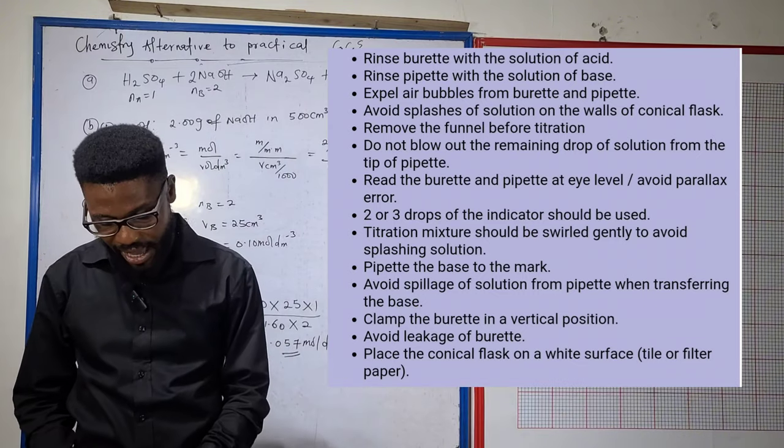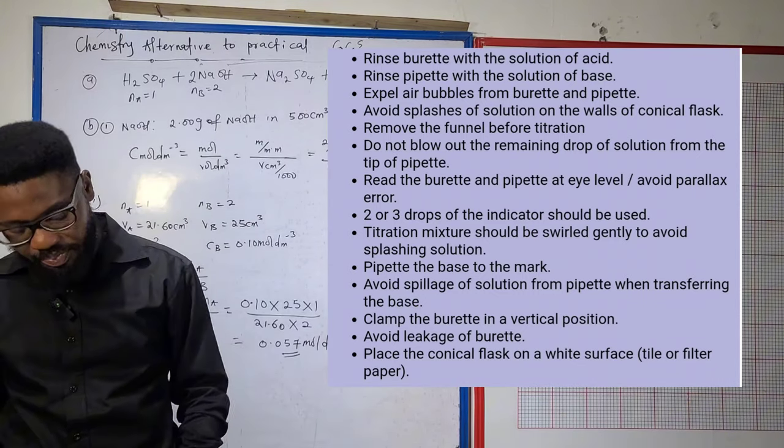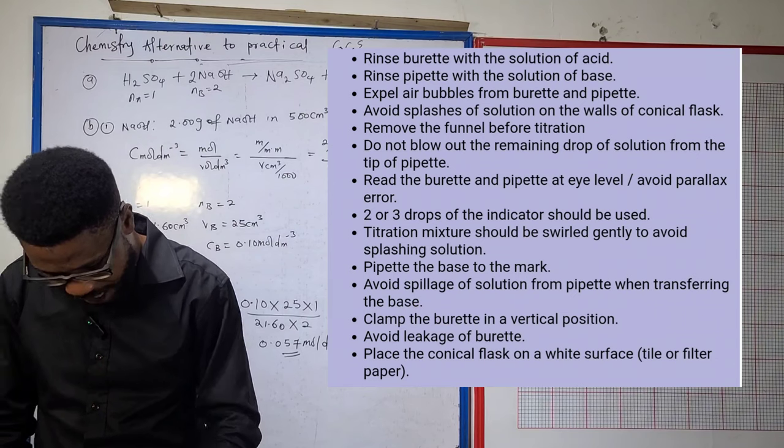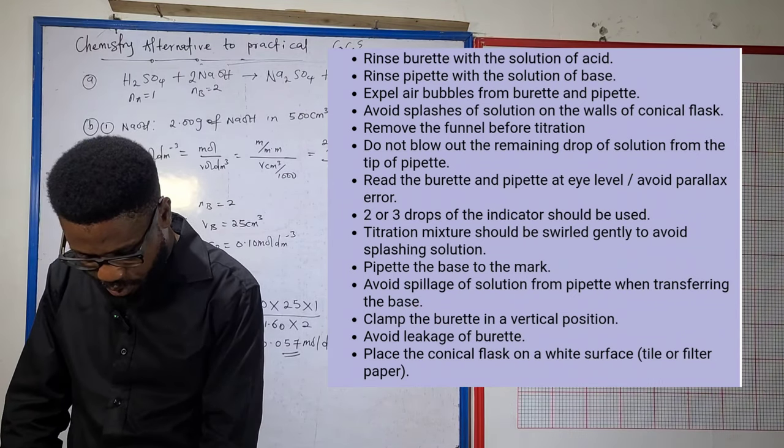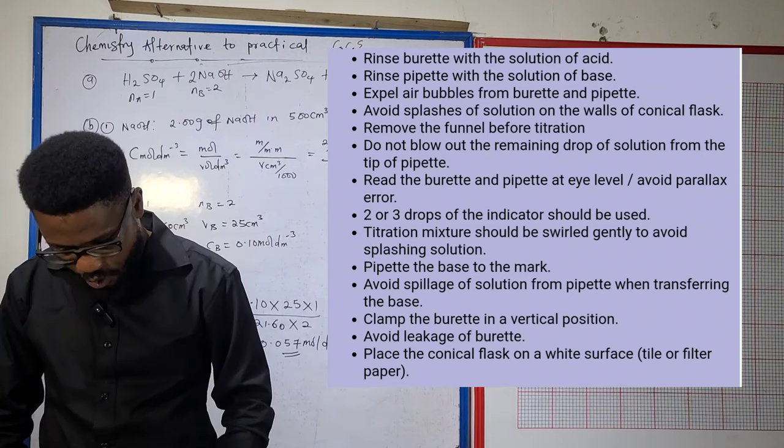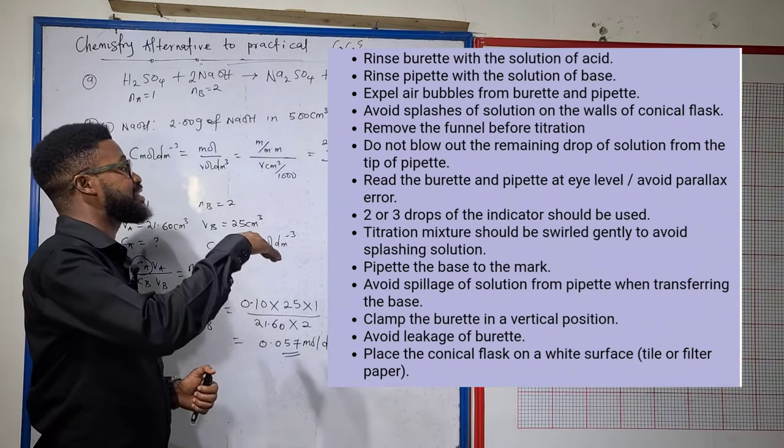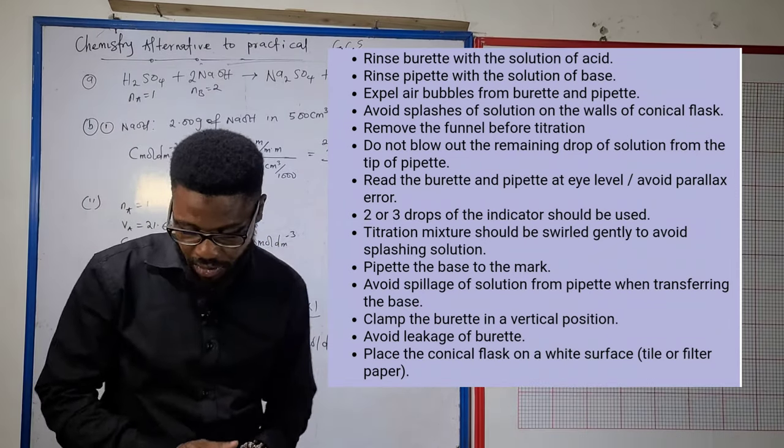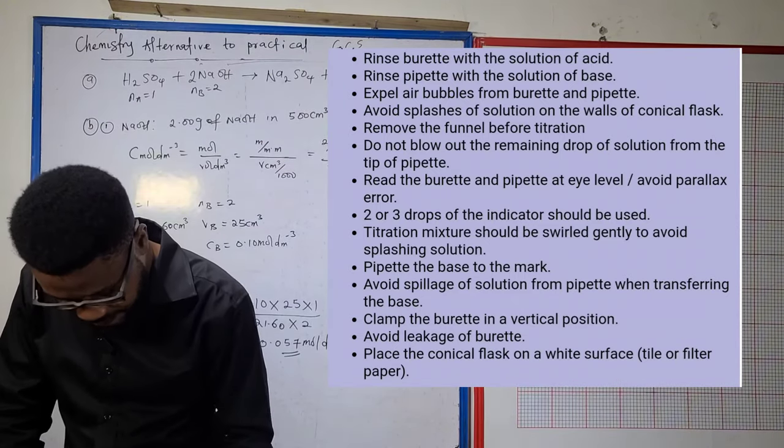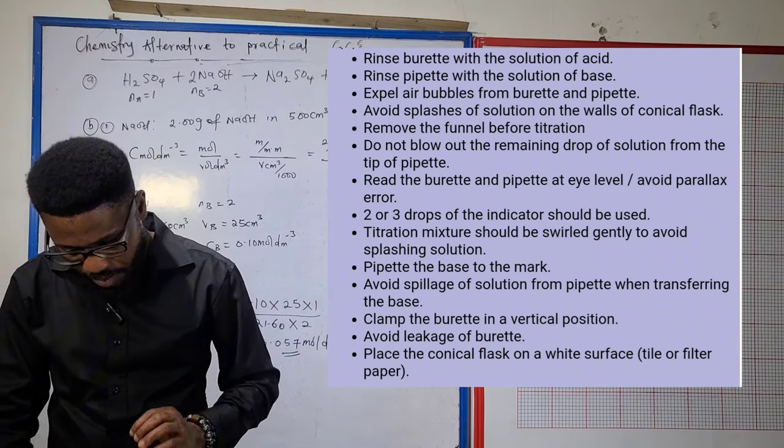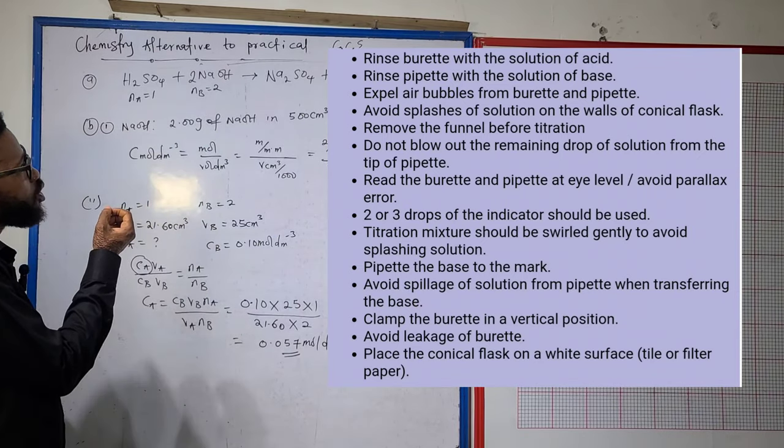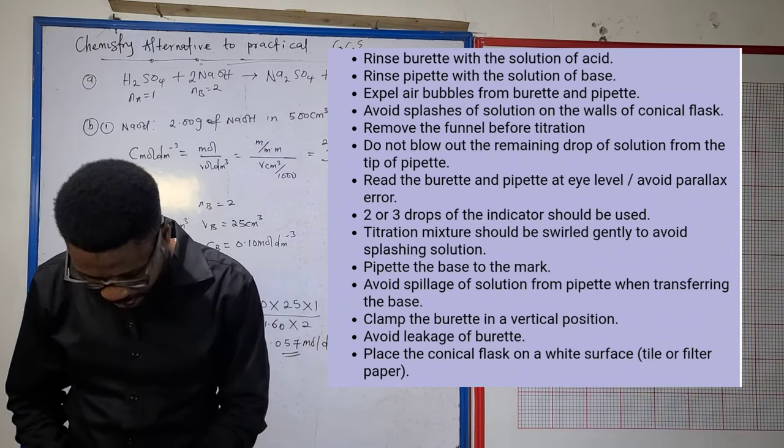We also rinse the pipette with distilled water, then with the base to be used for this titration. We have to expel air bubbles from the burette and pipette. We must avoid splashes on the walls of the conical flask. Remove the funnel before titration. Once you've gotten the acid into the burette, remove the funnel before you start titration. Do not blow out the remaining drop of solution from the tip of the pipette.